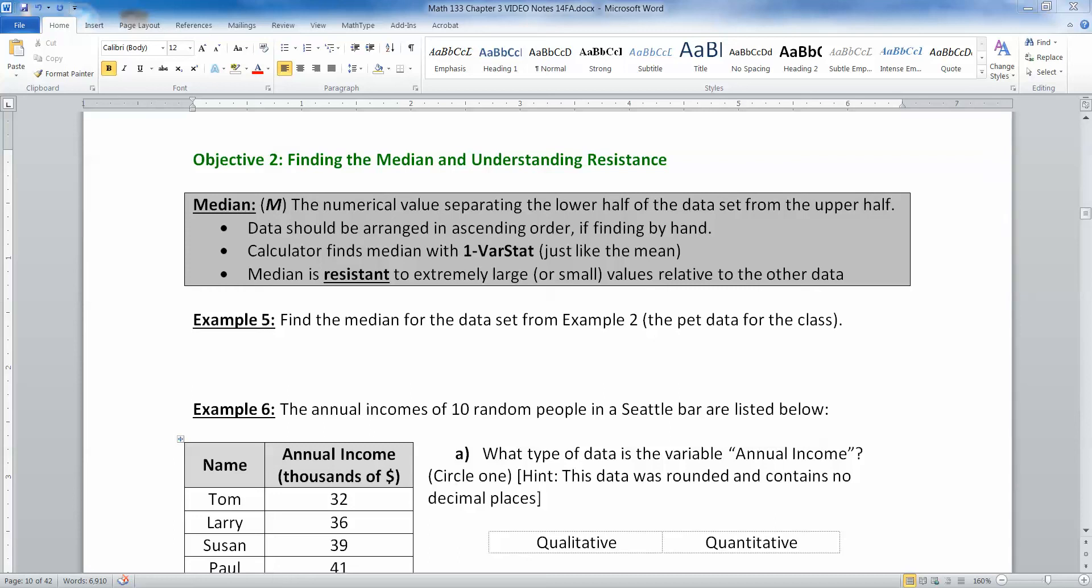Now that we've looked at the arithmetic mean, which is a very important measure of central tendency, it's not the only important measure of central tendency, however. There is another one that we're going to be interested in called the median. The median is the number that separates the lower half of a data set from the upper half of a data set when that data set is arranged in ascending order.